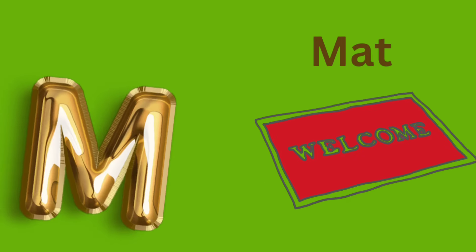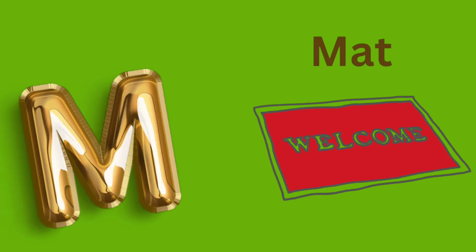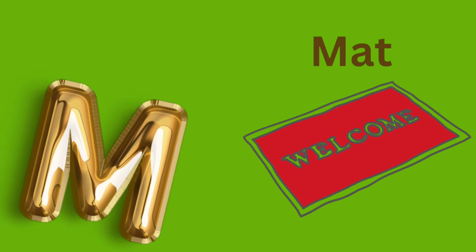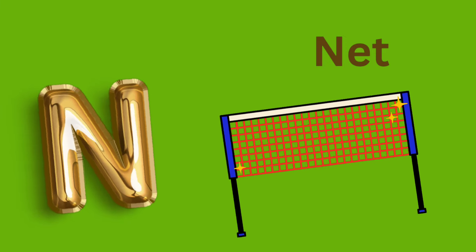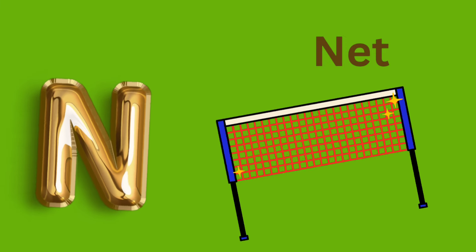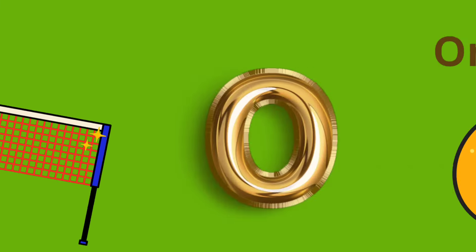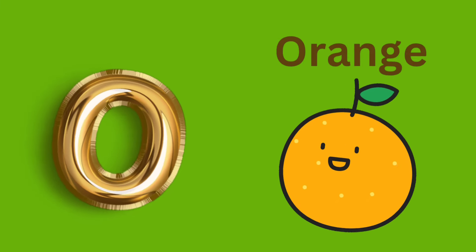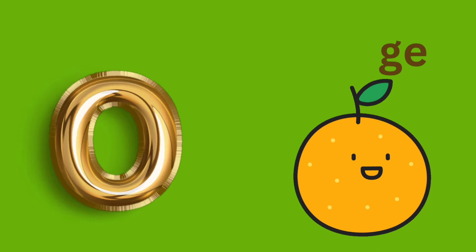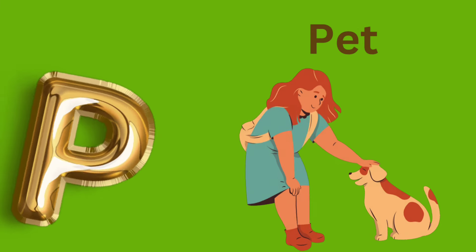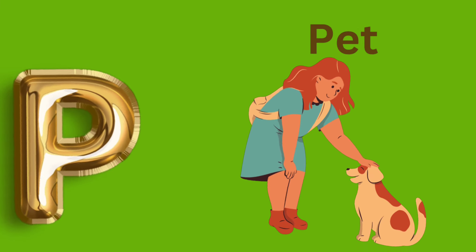M is for Mat, M-M-Mat. N is for Net, N-N-Net. O is for Orange, O-O-Orange. P is for Pet, P-P-Pet.